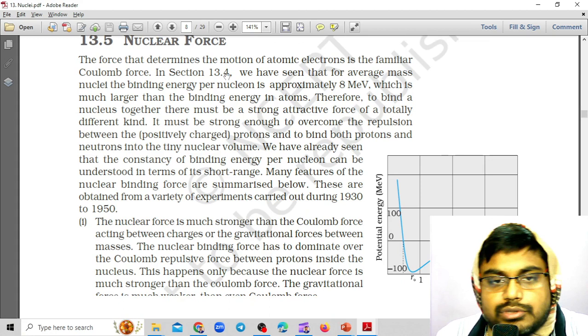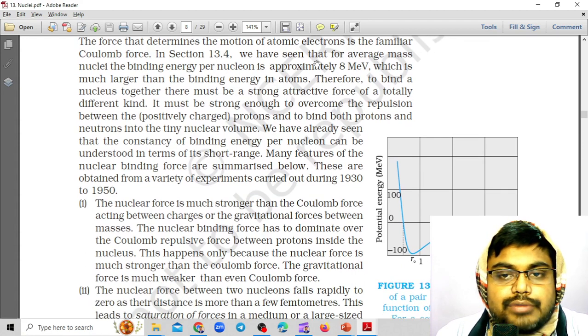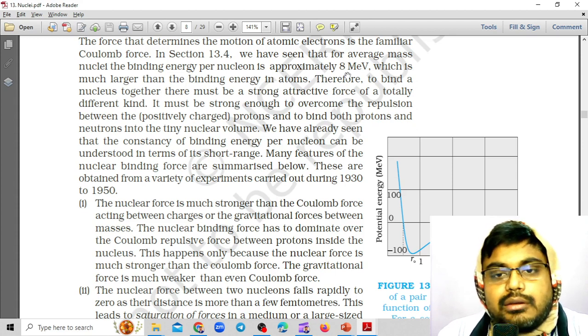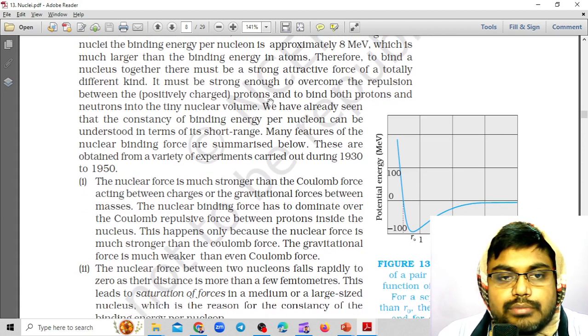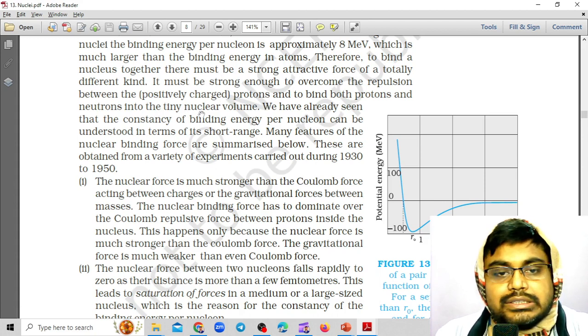The force that determines the motion of atomic electrons is the familiar Coulomb force. You have seen that for average mass nuclei, the binding energy per nucleon is approximately 8 MeV, which is much larger than the binding energy in the atoms. Therefore, to bind a nucleus together, there must be a strong attractive force of a totally different kind. It must be strong enough to overcome the repulsion between the positively charged protons and to bind both protons and neutrons into the tiny nuclear volume.